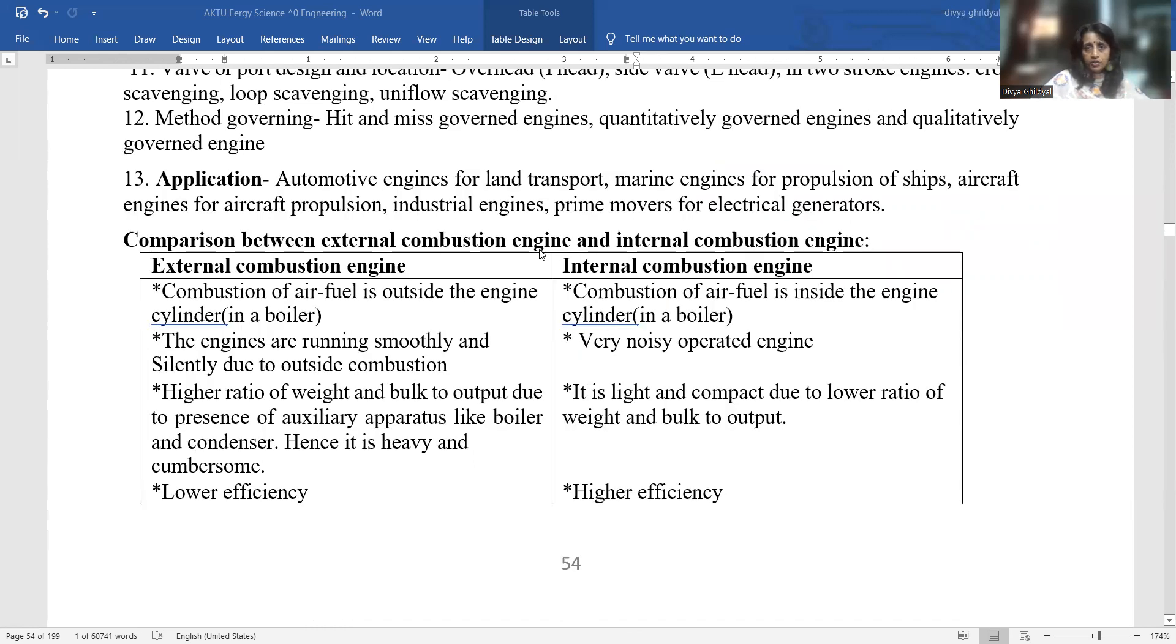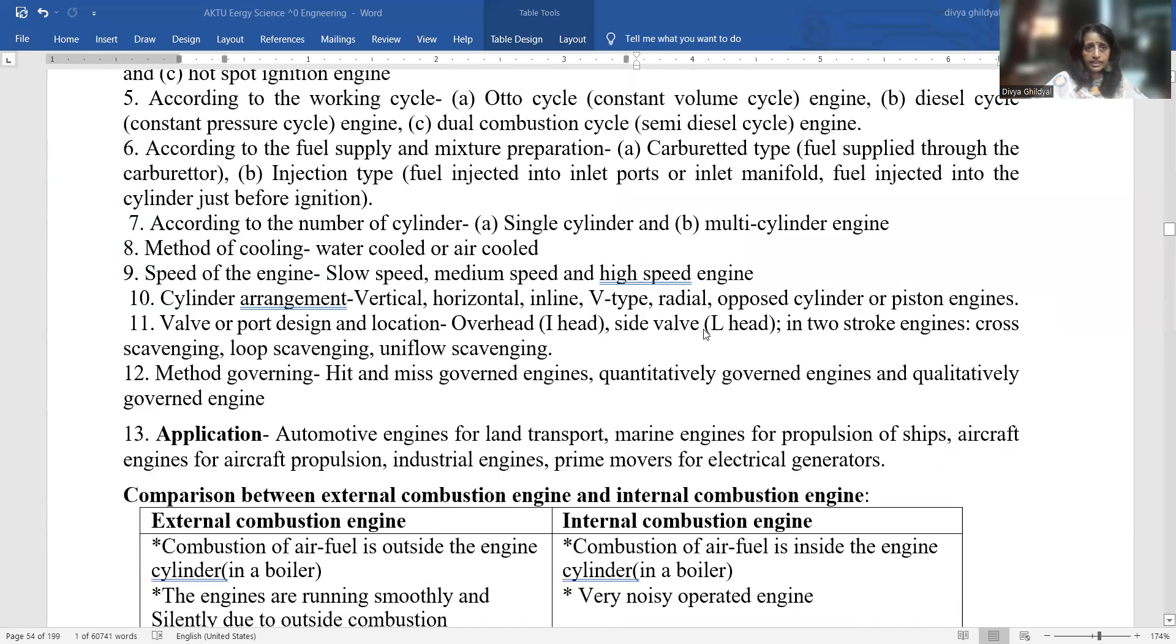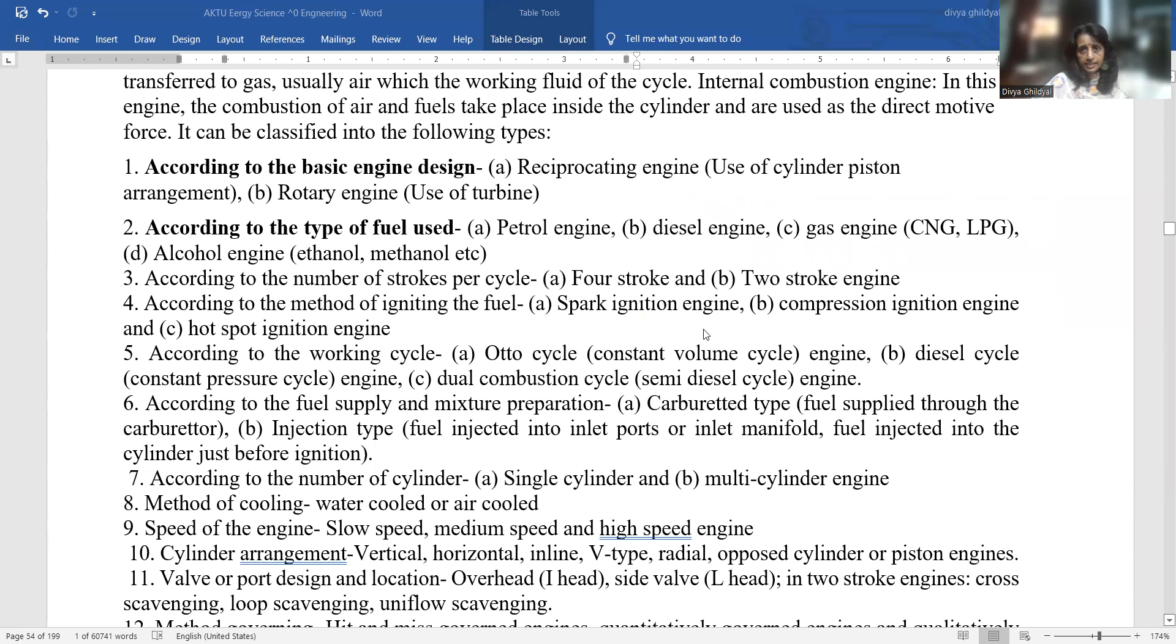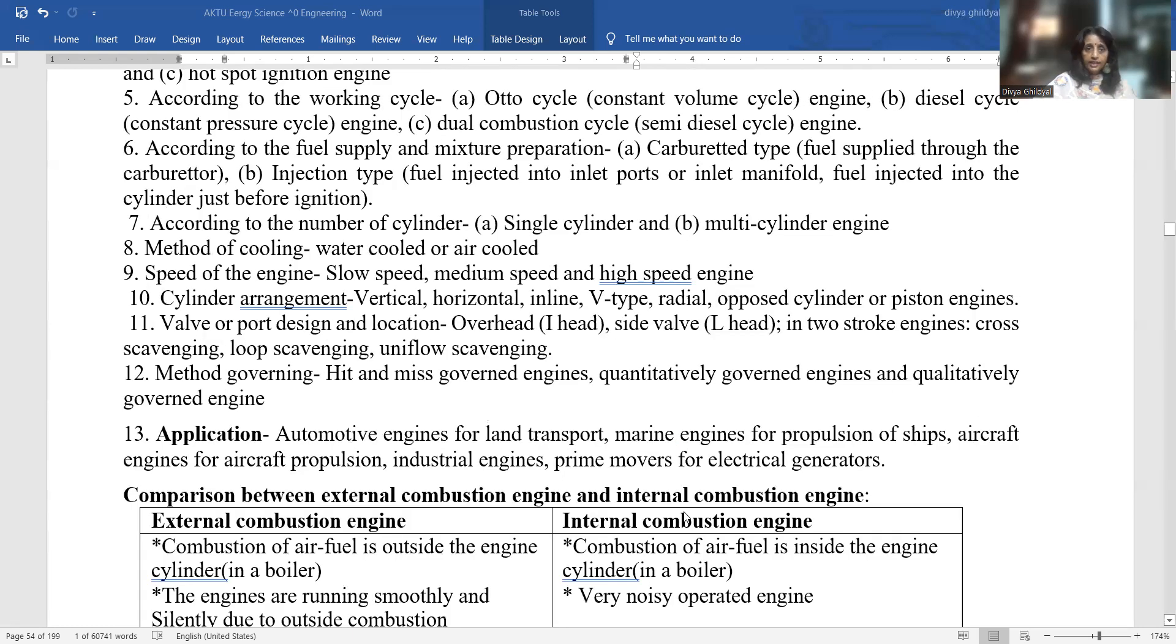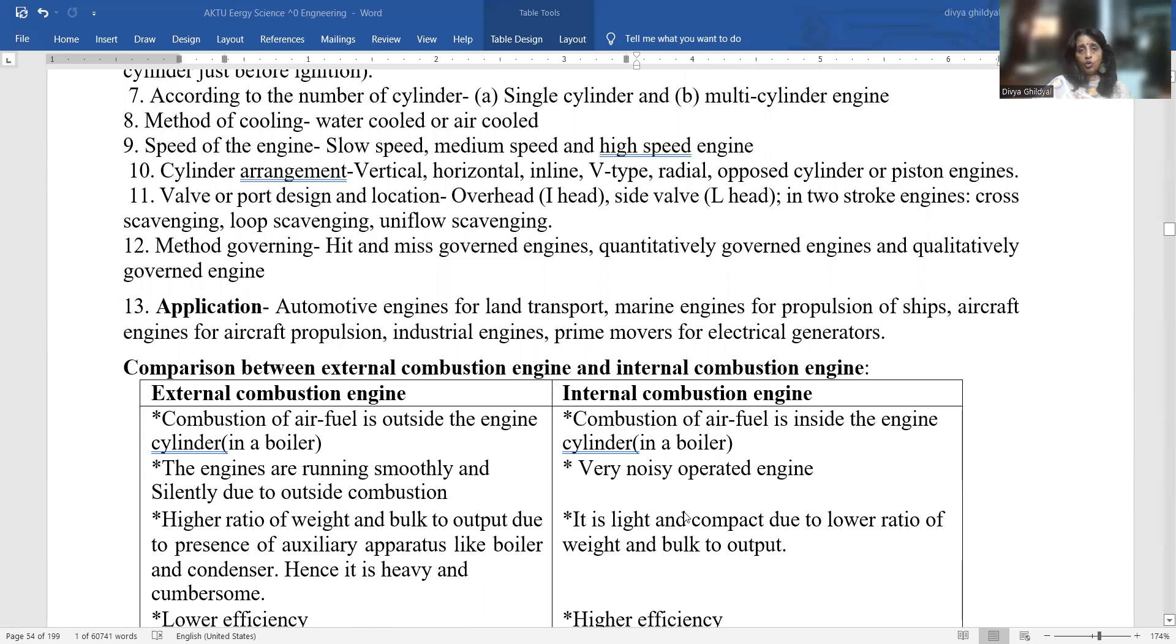Comparison between external combustion engine and internal combustion engine. These internal heat engines, according to basic design: the type of fuel used is petrol, diesel or gas; according to the number of strokes: four-stroke or two-stroke; according to the method of igniting the fuel: spark ignition or compression ignition; according to the working cycle: Otto cycle, Diesel cycle, dual combustion cycle; according to fuel supply: carbureted type or injection type; according to number of cylinders: single cylinder or multi-cylinder; speed of engine: slow or high; cylinder arrangement: vertical or horizontal application; automotive engines for land transport; marine engines for propulsion of ships; aircraft engines for aircraft propulsion.